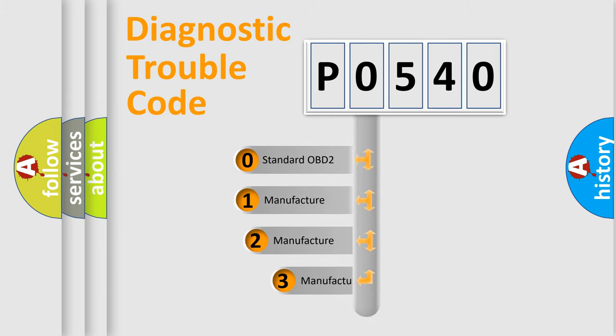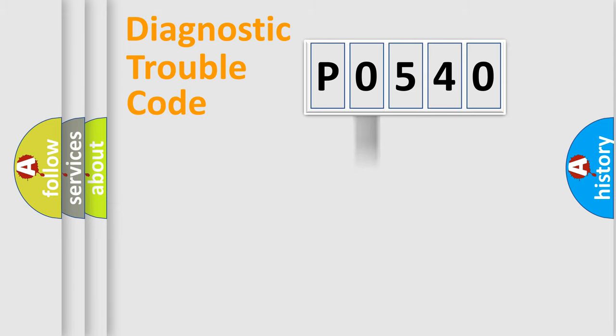If the second character is expressed as zero, it is a standardized error. In the case of numbers 1, 2, or 3, it is a manufacturer-specific expression of the car-specific error.